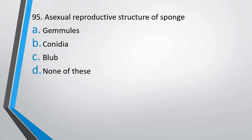Question number 95. What is the asexual reproductive structure of a sponge? Options: gemmules, conidia, bulb, or none of these. The correct answer is option A, gemmules.